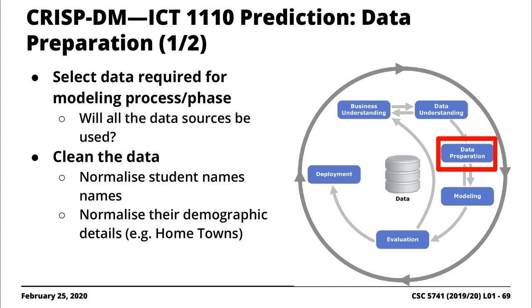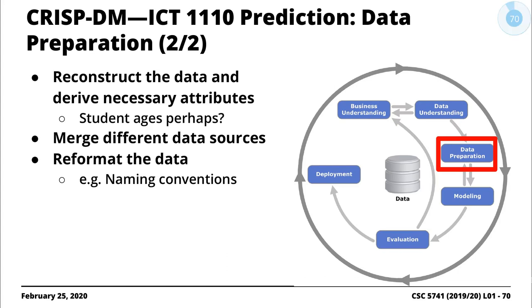We have students that wrote some assessments and then around quiz three or four, we stopped seeing them — they just vanished. You don't want to include those people unless you have a smaller number of observations. The merging process involves combining sources from the survey, the Moodle interaction logs, the student assessments, and the final data frame that you come up with is what you use as input to the learning algorithm.